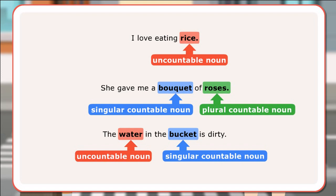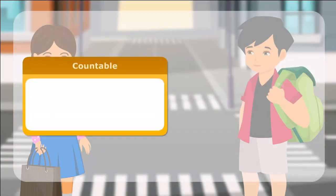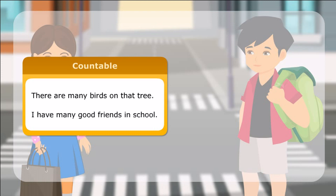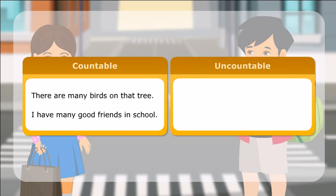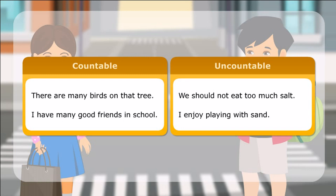Here are a few more examples of countable and uncountable nouns. Countable nouns: There are many birds on that tree. I have many good friends in school. Uncountable: We should not eat too much salt. I enjoy playing with sand.